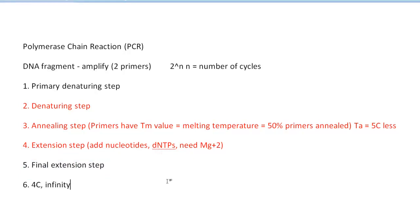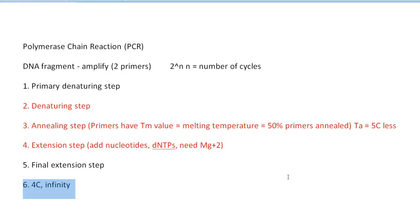The final extension step — usually around 10 minutes — ensures the polymerase fully completes all strands. This is optional depending on fragment length. Then set the machine to 4°C; you can keep the PCR products overnight and the next day PCR-purify them, run them on a gel, or whatever you need — they'll be perfectly fine.